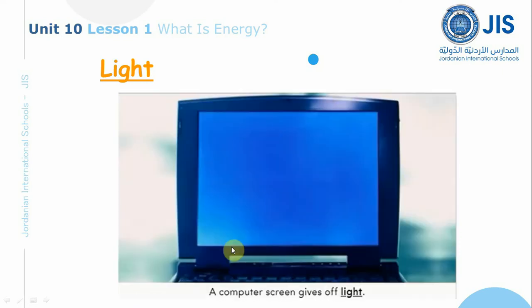A computer screen gives off light. Computers, televisions, and other electronic devices give off light. This lets us see an image on the screen.